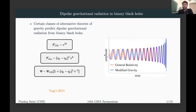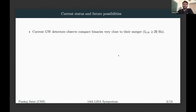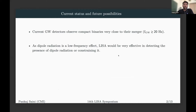These changes will appear as a correction in the gravitational phase proportional to the difference in scalar charges and v^{-2}. In the post-Newtonian counting, this v^{-2} term is known as the negative 1PN term, which dominates at low velocities or low frequencies. Due to additional energy loss from the system, the merger of these black holes will happen at an earlier time than in GR. Currently, gravitational wave detectors observe these compact binaries very close to merger when the binaries are moving very fast, and any dipole radiation will be suppressed at this stage. Since dipolar radiation is a low-frequency effect, LISA, which observes in the low-frequency spectrum when binaries are far apart and moving slowly, will be very effective in detecting the presence of dipolar radiation.